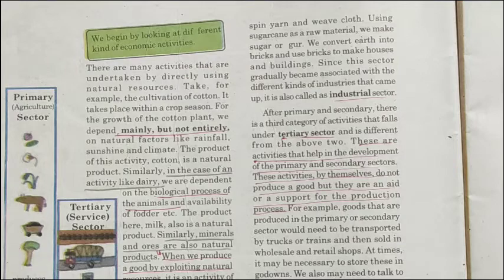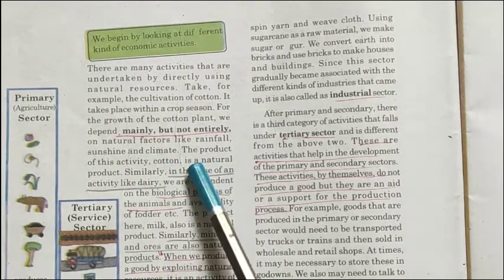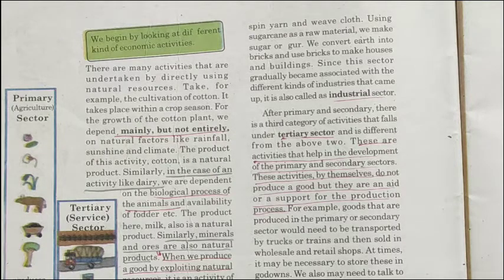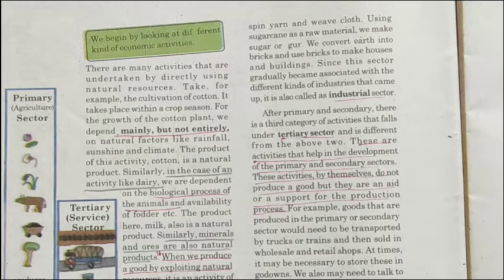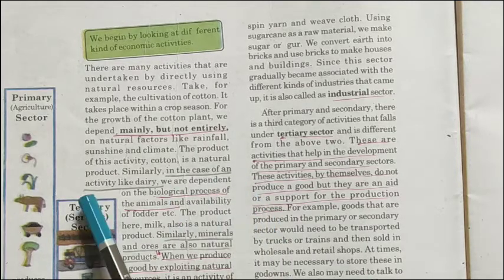Our very first sector is the primary sector. It includes those activities which are directly related to natural resources. For example, to grow a cotton plant we depend mainly on natural factors like rainfall, sunshine, and climate. These are the necessities to grow a plant, but not entirely — humans can also take care of the plant by giving water, fertilizers for healthy growth, and other care. The cotton plant is multiplied by the process of cultivation.